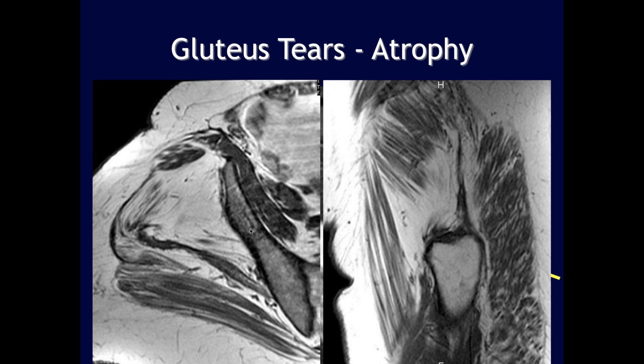Gluteus medius tears are a significant clinical problem — previously called trochanteric bursitis, they are now better recognized on MRI as tears of the gluteus minimus and medius attachments rather than purely inflammatory bursal changes. In patients with severe sarcopenia and poor tissue quality, surgical repair is extremely difficult because tendons don't heal well, leading to very poor healing response and many patients becoming bedridden.